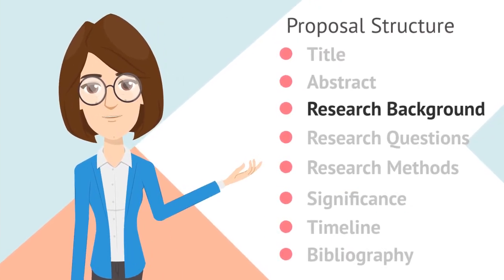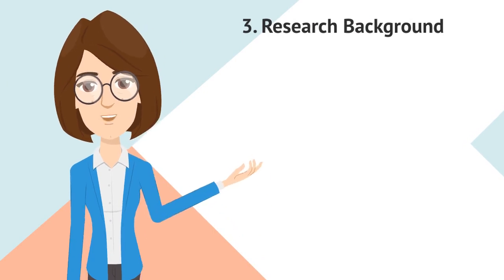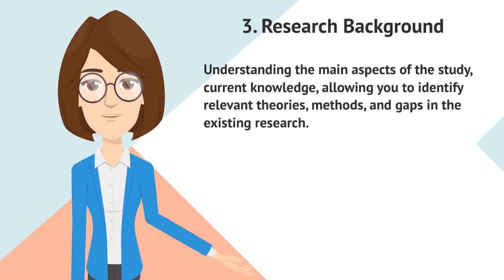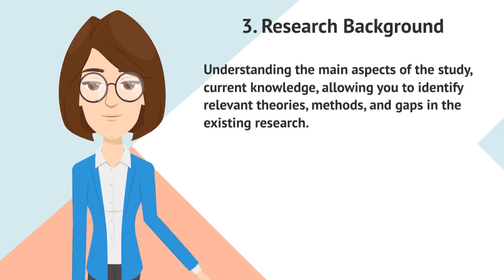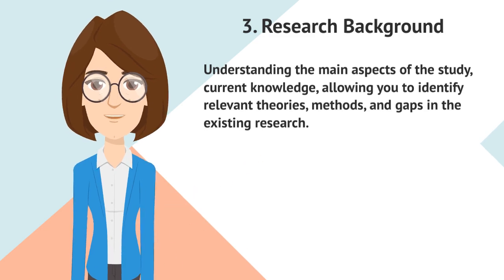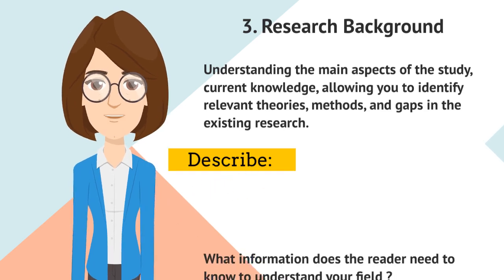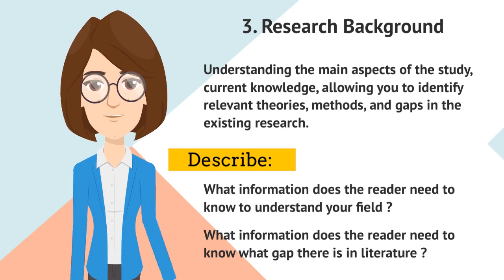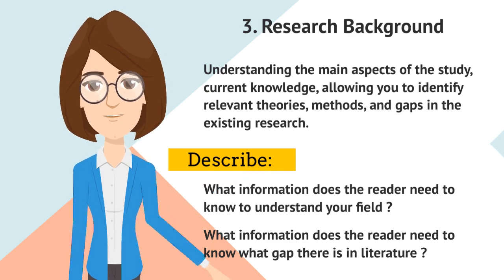Section 3 is Research Background, which is a bit like a literature review but more concise. This section explains why the research topic is important, covering current knowledge and allowing you to identify relevant theories, methods, and gaps in existing research. You should have done a lot of reading to understand where your work fits into the field. Don't underestimate the importance of this section — it shows whether you have done exhaustive reading.